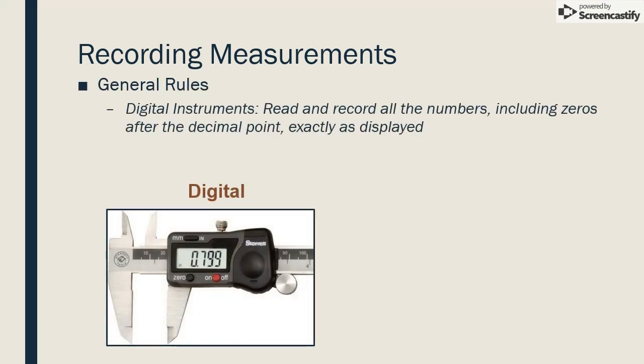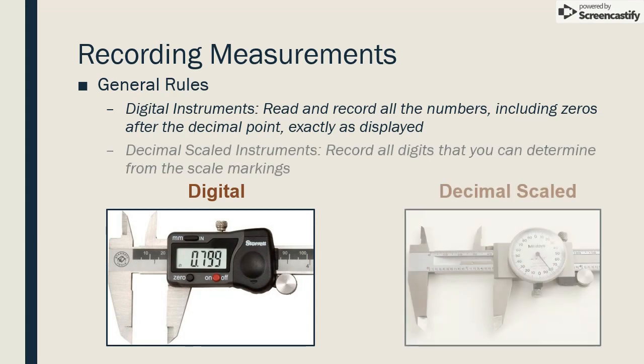When measurements are taken digitally, they should be reported exactly as they're read, including zeros after the decimal point. When using decimal scaled instruments, record all digits that you can determine from the marks on the scale, and do not try to estimate greater precision than the instrument is designed to report.